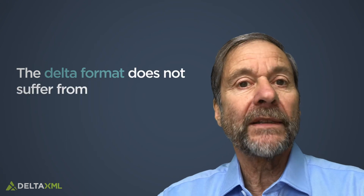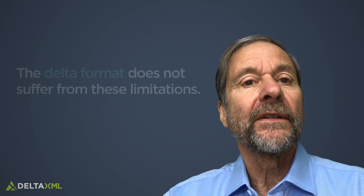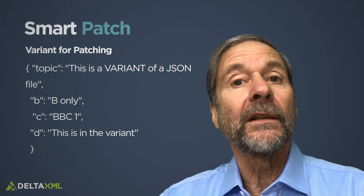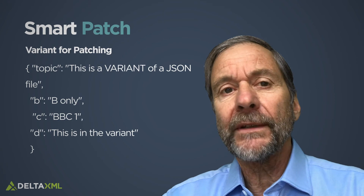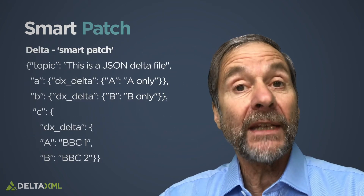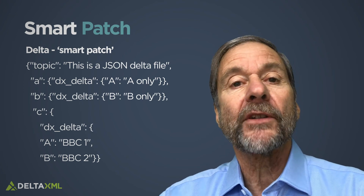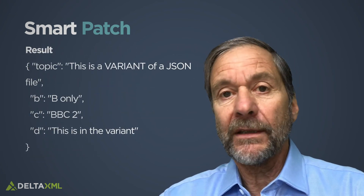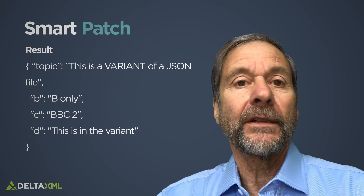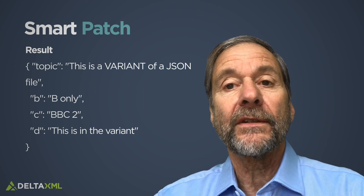The delta format that we've designed doesn't suffer from those limitations. The contextual information contained in the delta file enables us to implement a much more powerful version of patch, which is able to patch variants — we call this a smart patch, and it works very much like the graft operation. So do take a look at the JSON delta and you'll probably find other ways that you can use it.